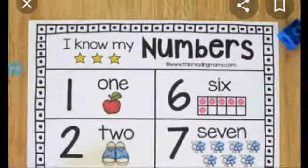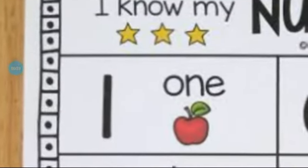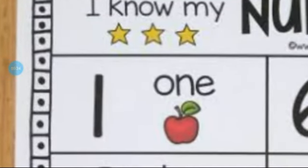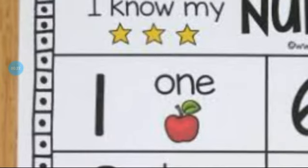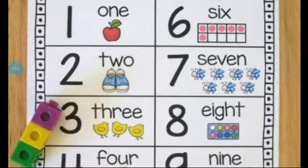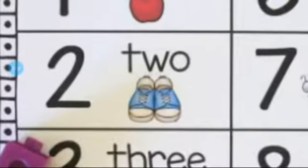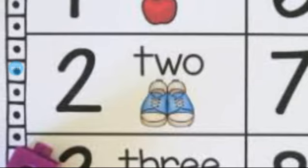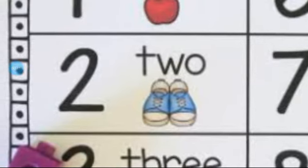So this is the chart. Now tell me students, which number is this? This is number 1. And how many apples are here? 1 apple. Now tell me which number is this? This is number 2. And how many shoes are here? 2 shoes.